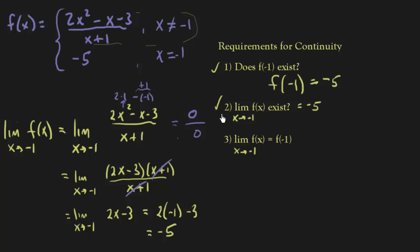The last requirement is does the limit as x approaches negative 1 actually equal f of negative 1? Now that's basically saying does step 1 and step 2 equal each other? Step 2 says the limit is negative 5 and f of negative 1 is negative 5, and so they work out.